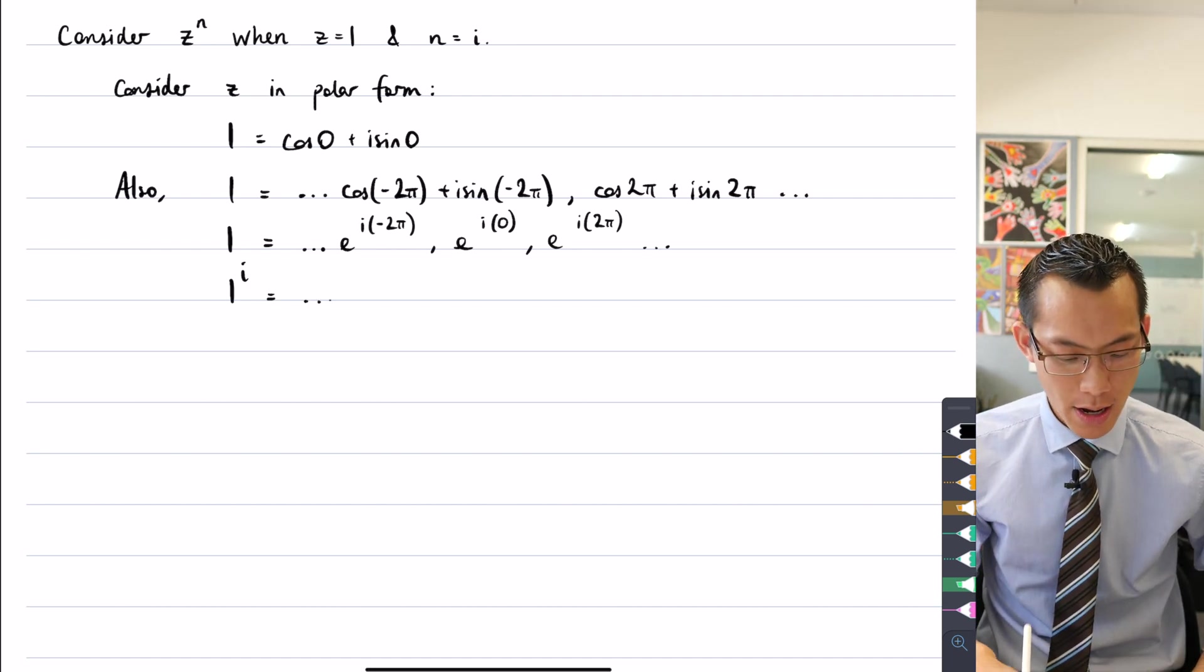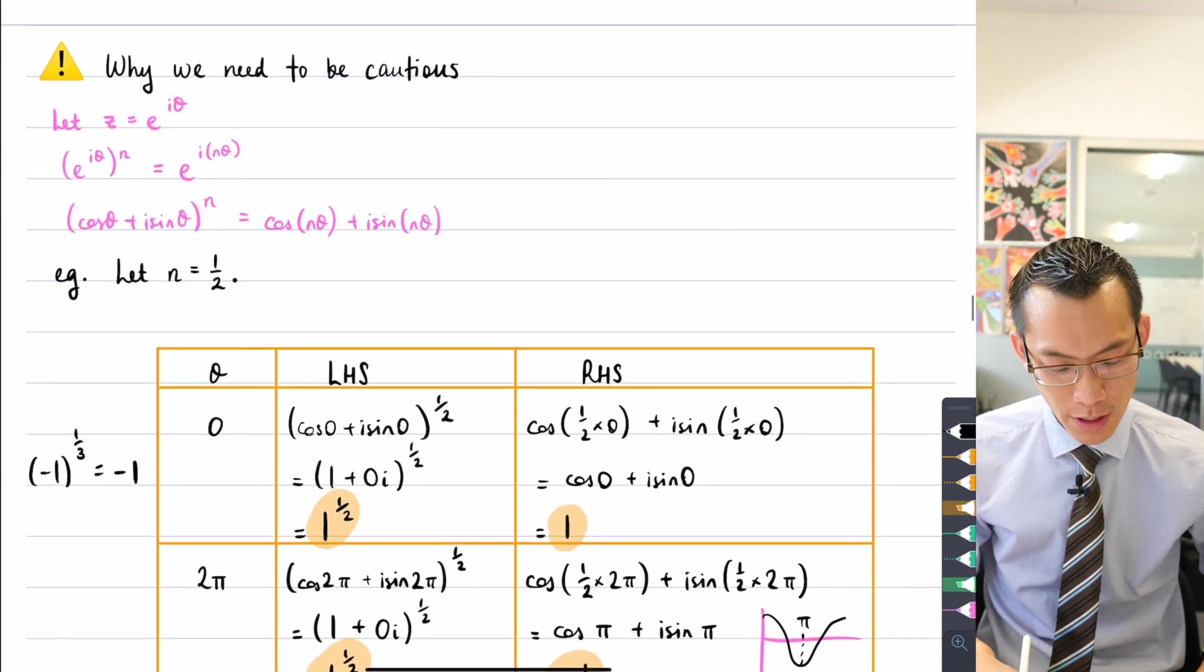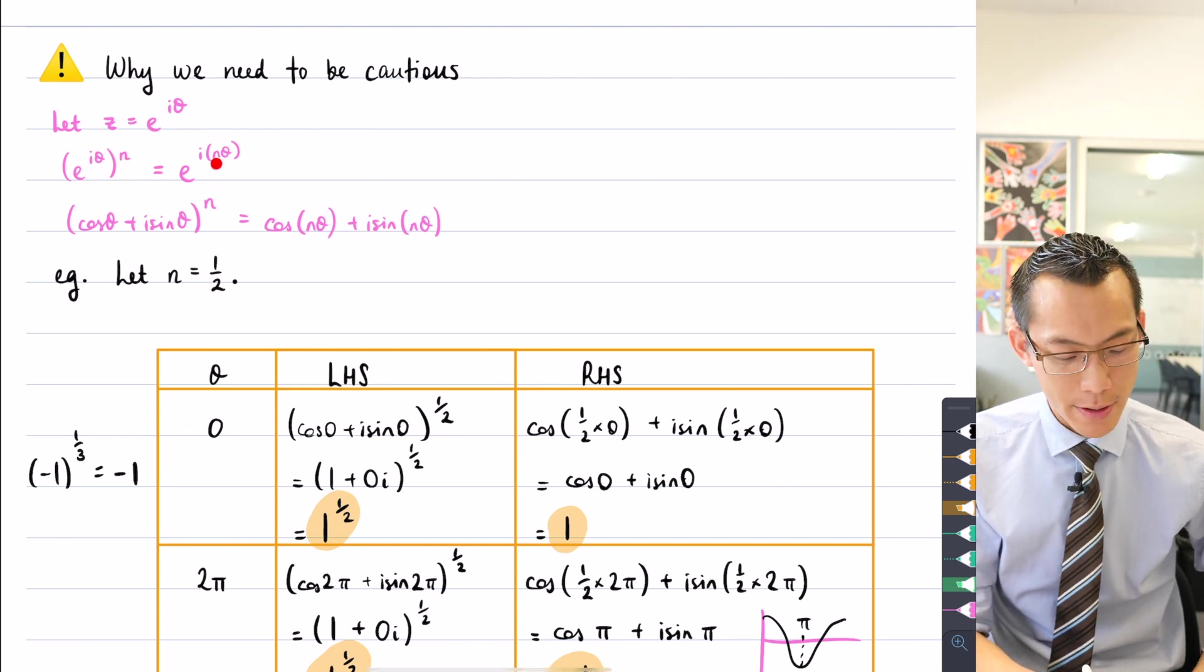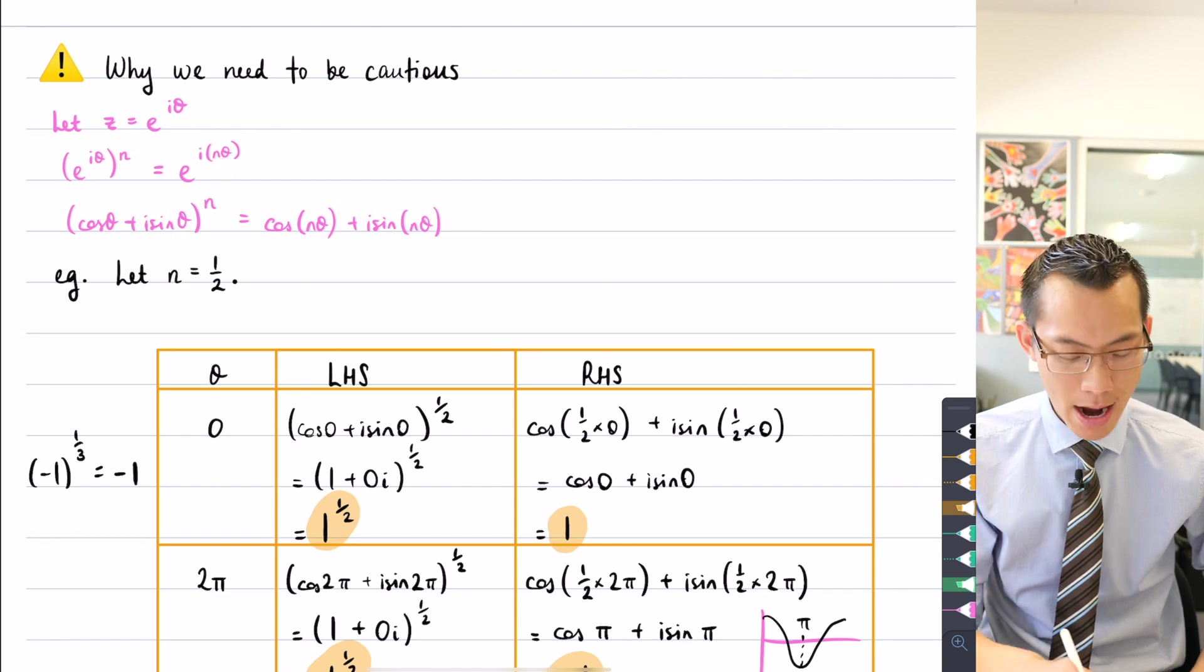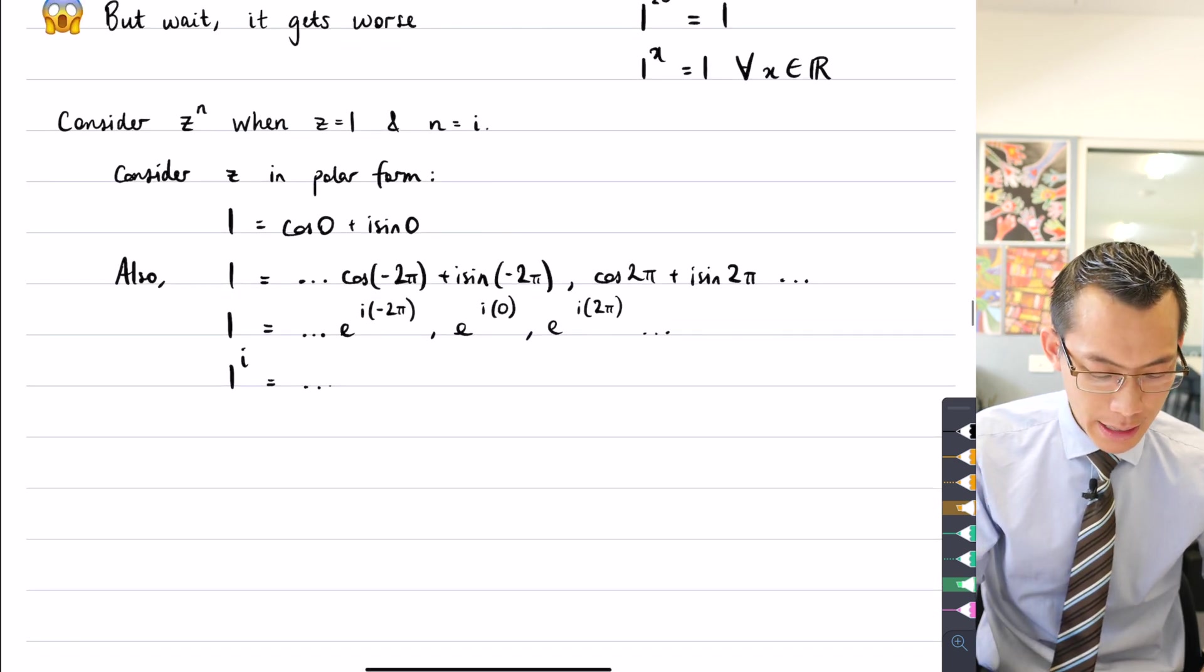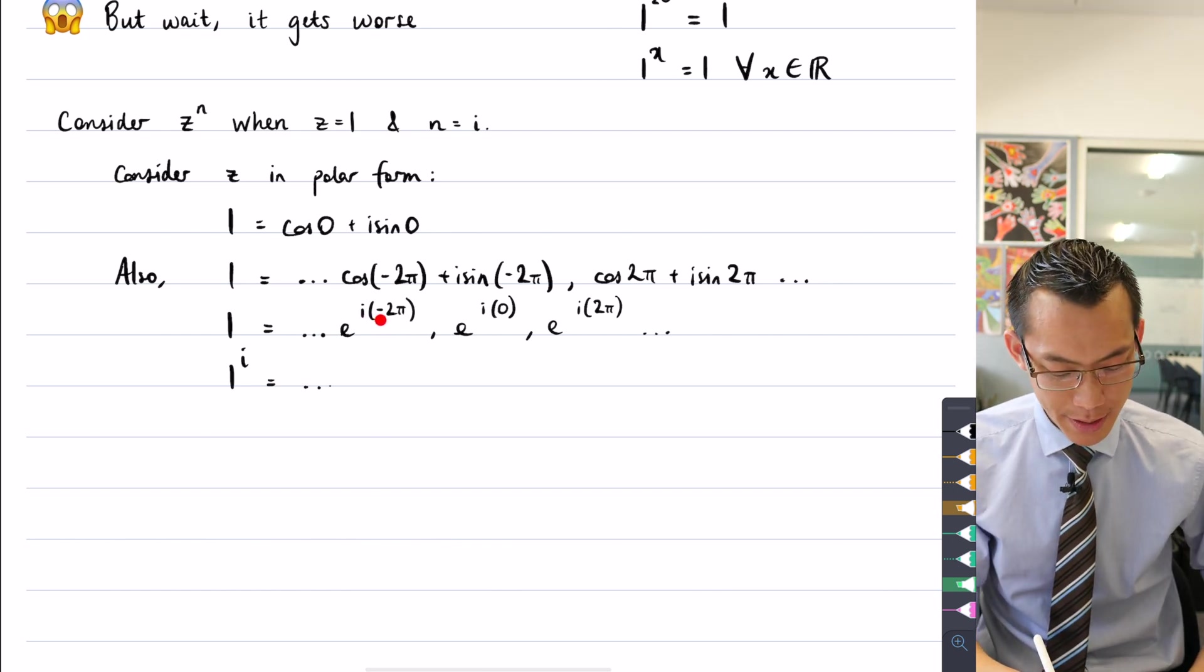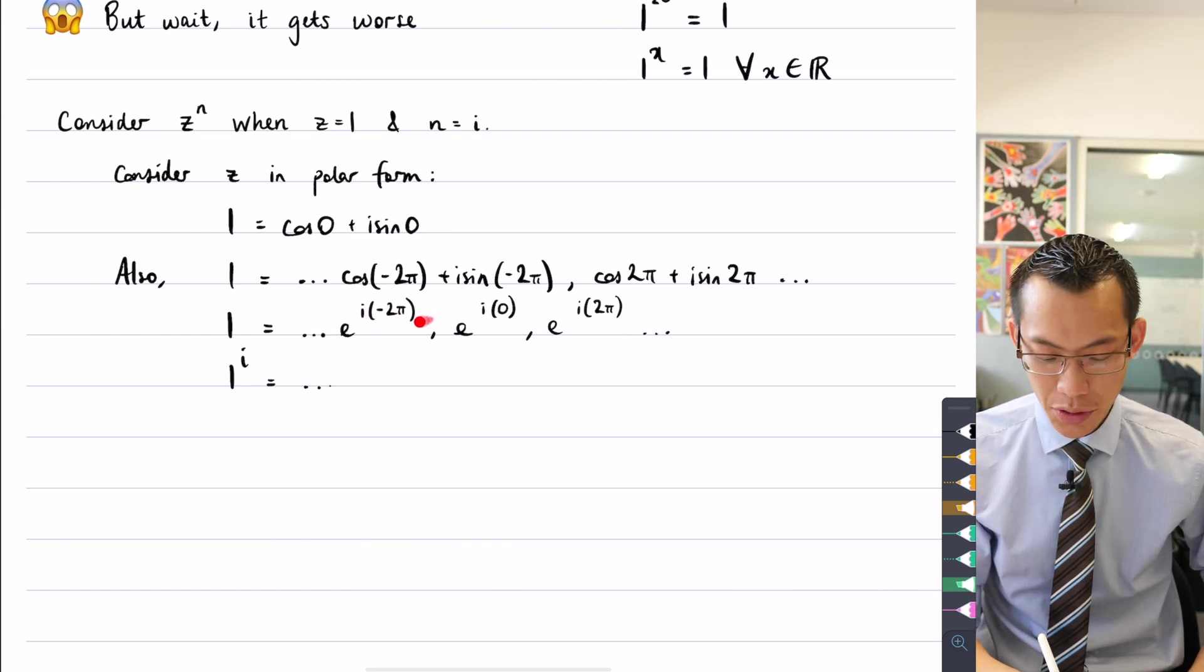Just like I did on our almost our very first line of working, if I raise something to the power, it's the same as multiplying by that power. So therefore, I'm going to get here, this term here, when I raise it to the power of i, it's going to be i times negative two pi times i. So in other words, there'll be an i squared there.